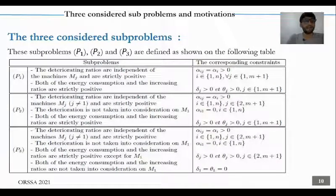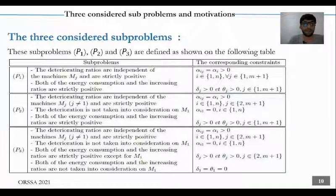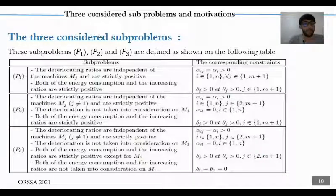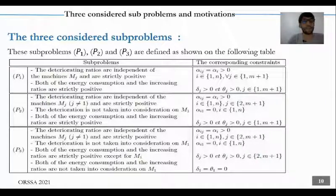On this slide, we present the three considered sub-problems. We consider three sub-problems of our general problem, denoted P1, P2, and P3, defined as shown in the following table. For example, in P1, we consider the deteriorating ratios are independent of the machines M_g and M_j and are strictly positive. We consider that both the energy consumption and the increasing ratios are strictly positive, with the corresponding constraints as shown.